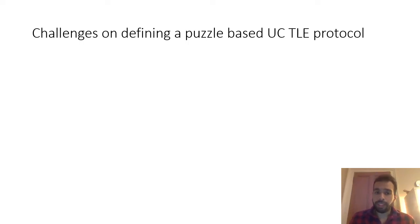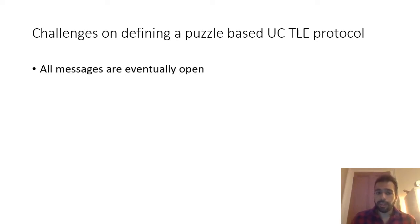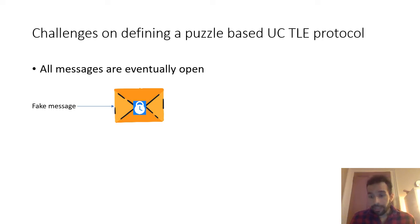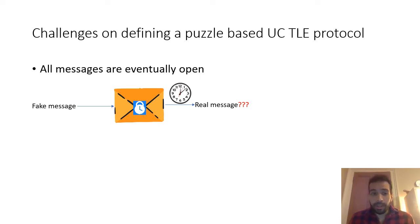Of course, there are challenges in defining a puzzle-based UC TLE protocol that realizes our ideal functionality. The first challenge is related to the fact that all messages are eventually opened. Specifically, the simulator receives only the length of the message, so the simulator needs to produce a ciphertext based on something it doesn't know. For that reason, the simulator just encrypts a fake message. But in the context of time-lock encryption, that message will eventually be opened after some time, and when opened, it needs to open to the real, correct message. So how is this possible — how can the simulator encrypt a fake message and open it to the correct one?